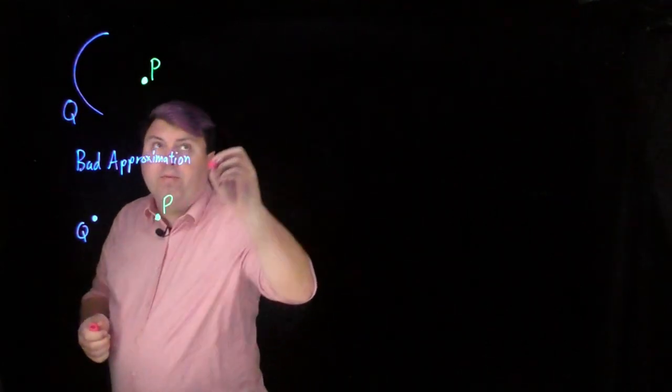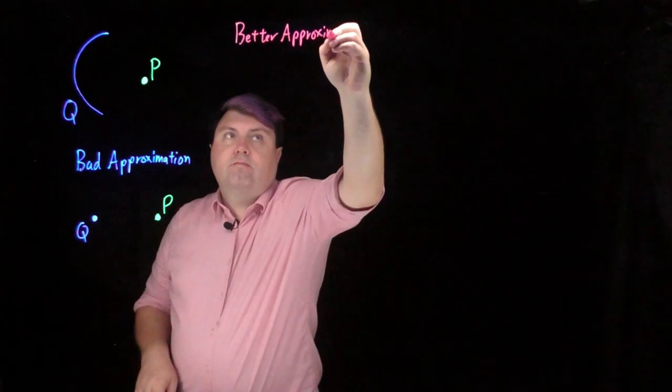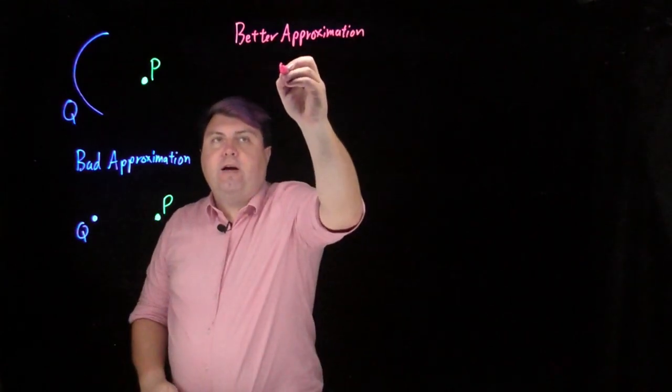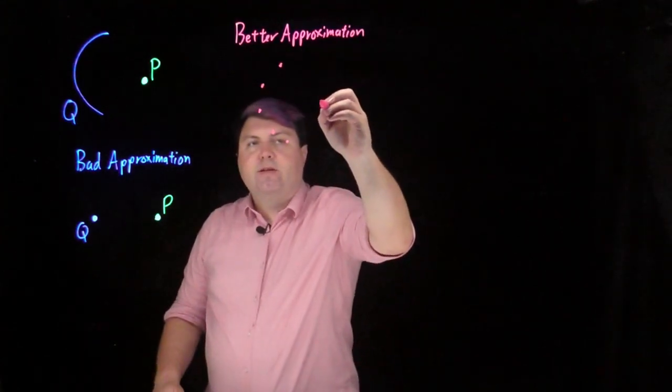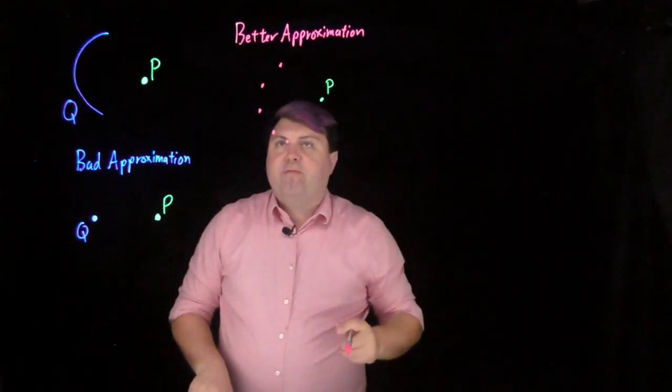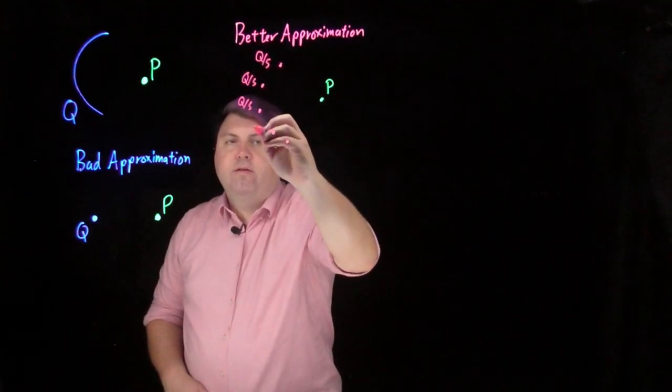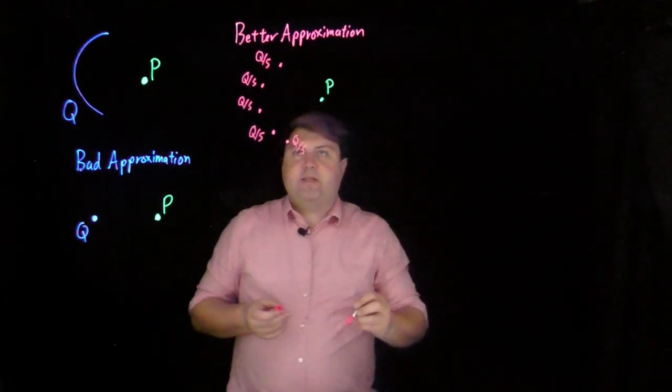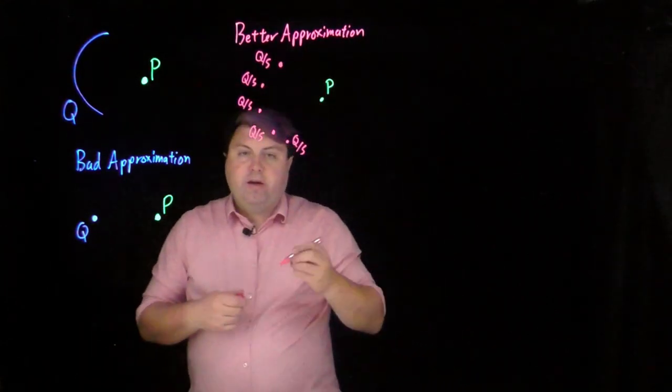So let's look at a better approximation. We could split this into five separate pieces. Looking at this, each of these five pieces would then have one-fifth the charge, q over five. And we could certainly see some issues with this, but we could see also that these five charges are certainly better than this one charge. So we could get a good approximation.